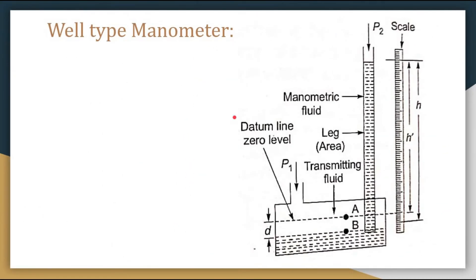The well type manometer is obtained when one of the two legs of an ordinary manometer is replaced by a large well. So one of the two legs is replaced by a large well.